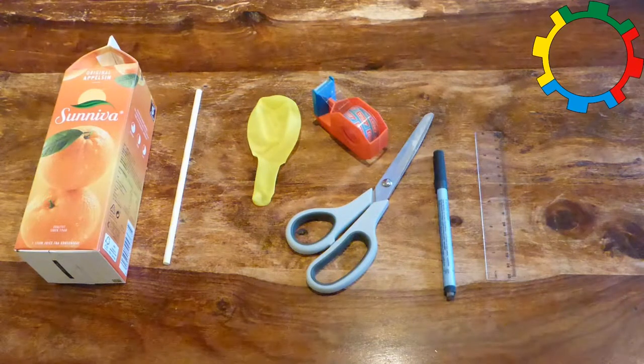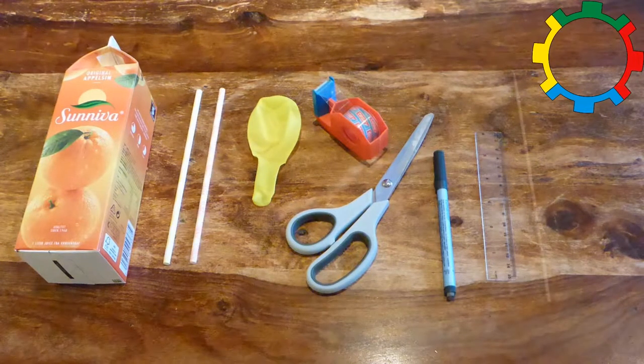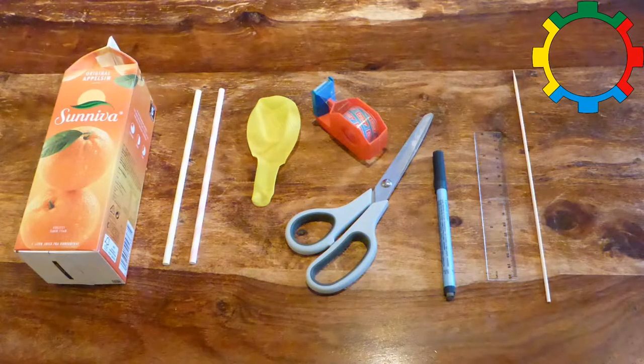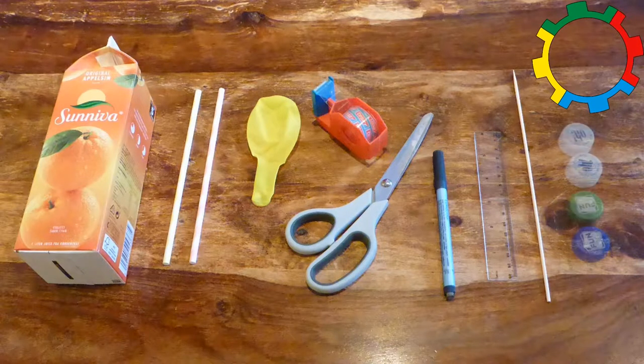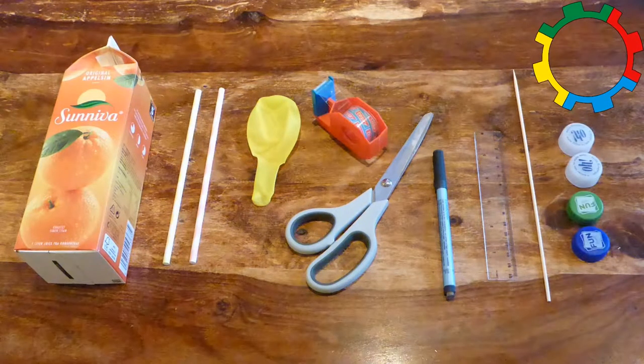For the amphicar you need in addition a second paper straw, one wooden skewer about 4 millimeters wide and at least 20 centimeters long, and four plastic bottle tops of the same size.